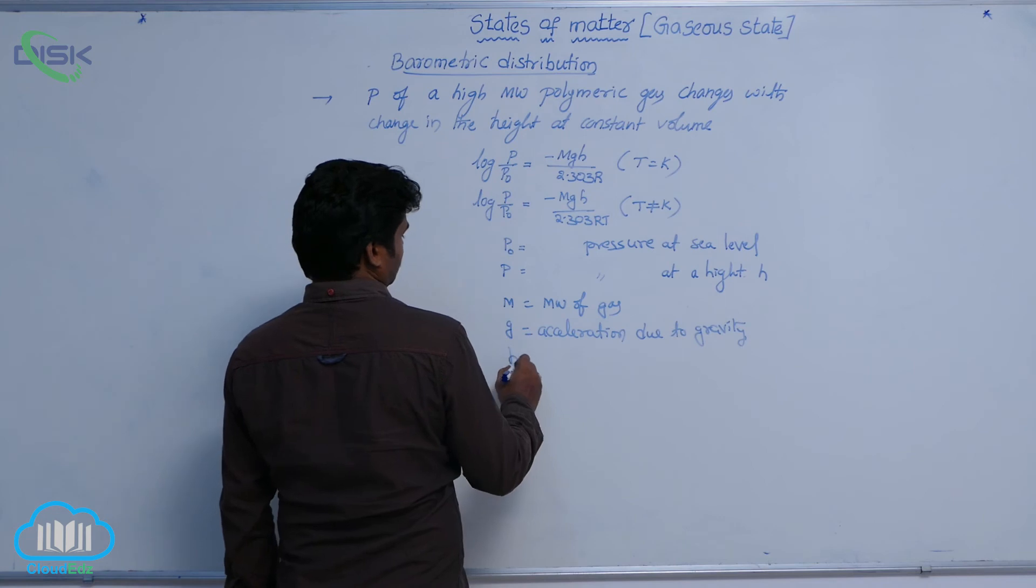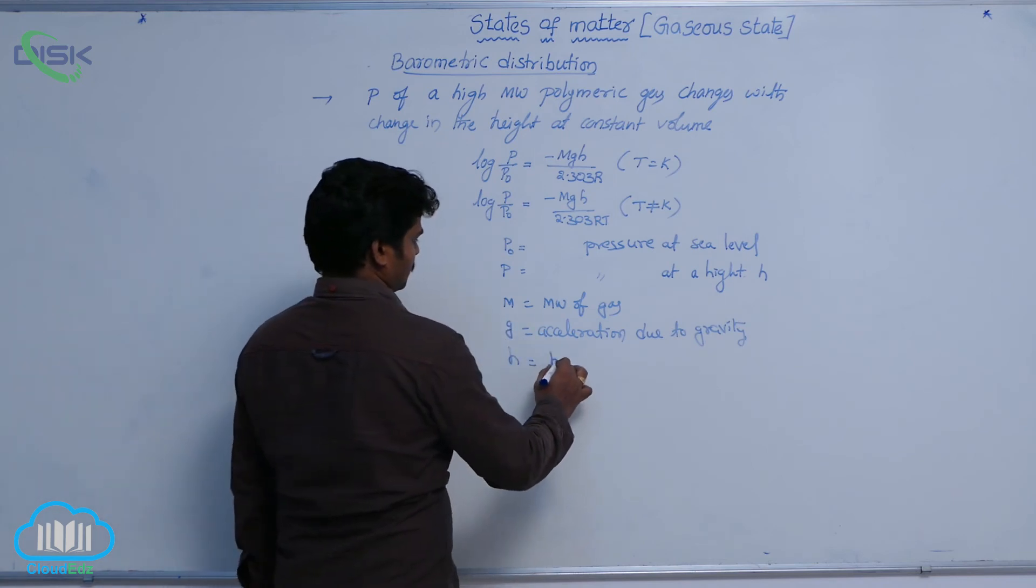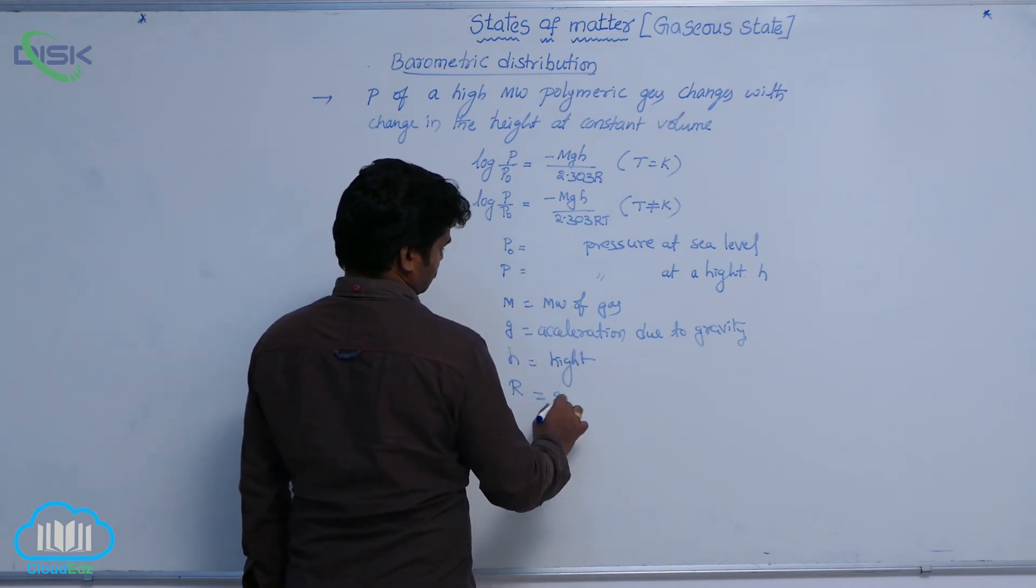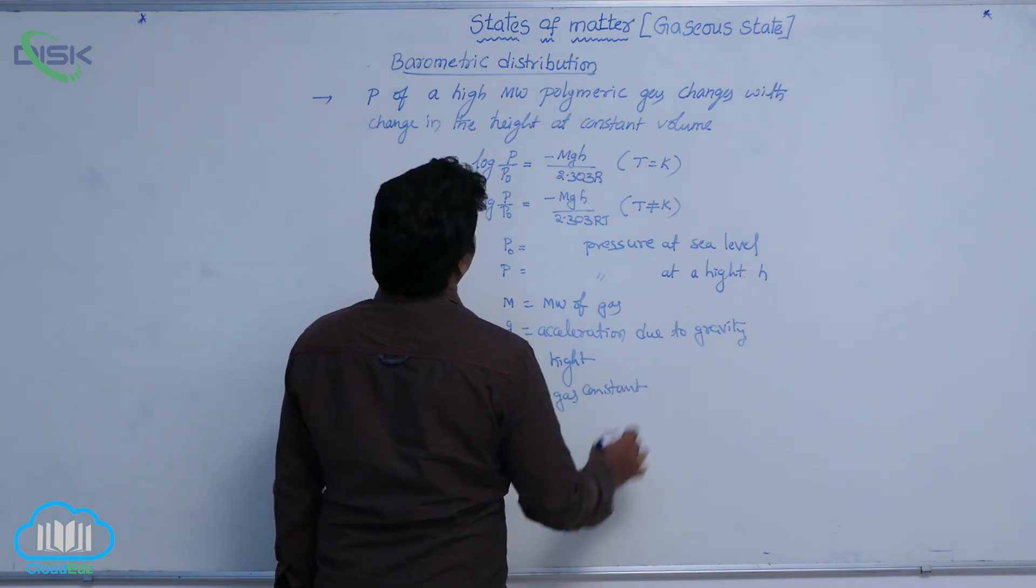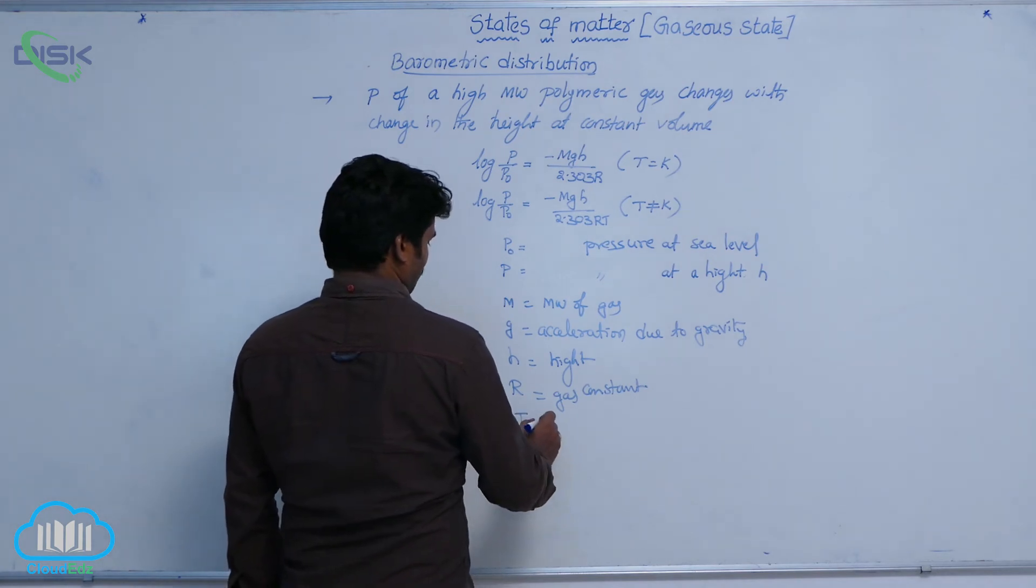Next, H is height at which the gas is placed. Similarly, R gas constant, R gas constant and T is absolute temperature.